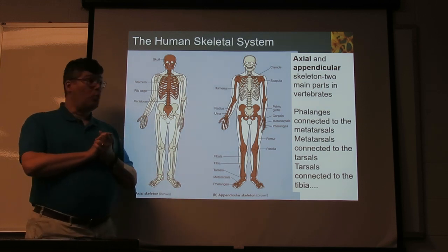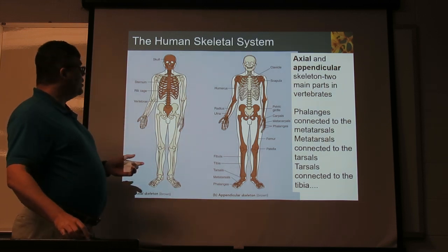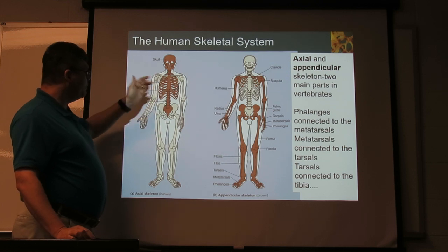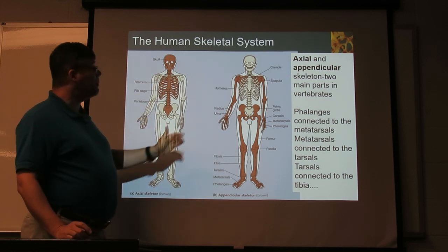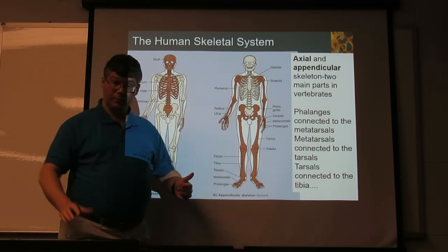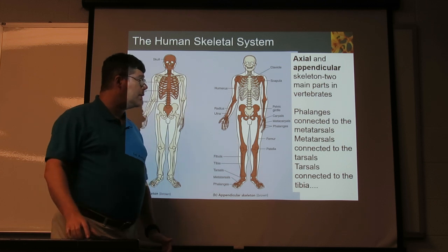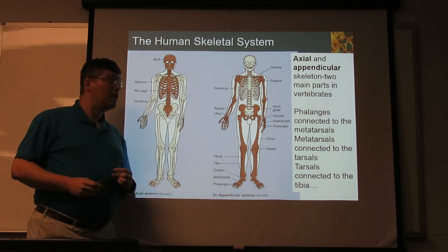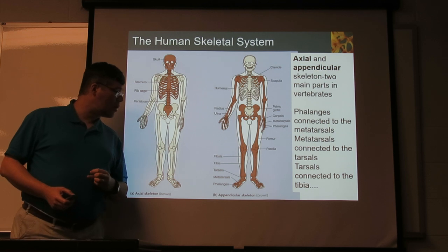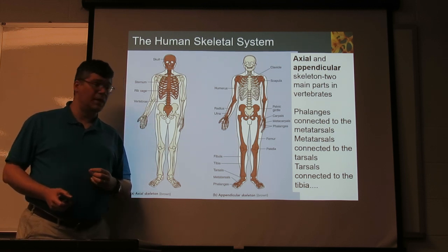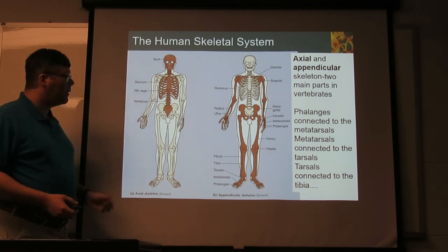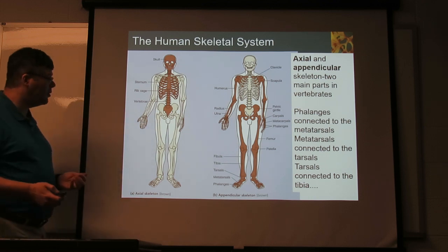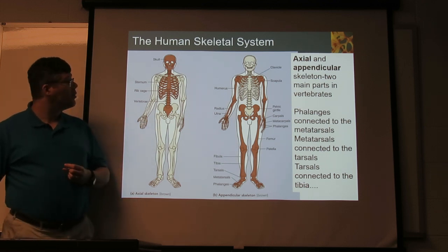Our skeleton, we can recognize two parts. The axial — the central part: skull, ribs, backbone. And appendicular — the arms, the legs. And all the different parts connecting together. The phalanges connected to the metatarsals, metatarsals connected to the tarsals, and so on.